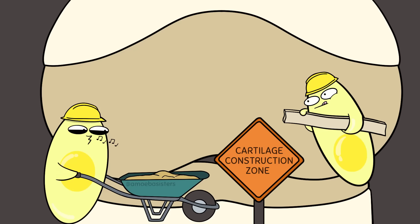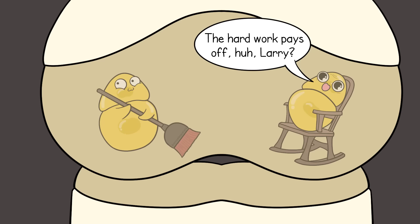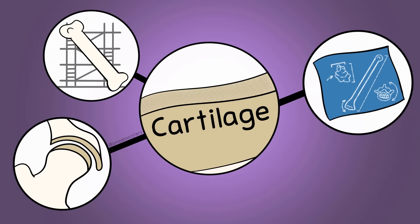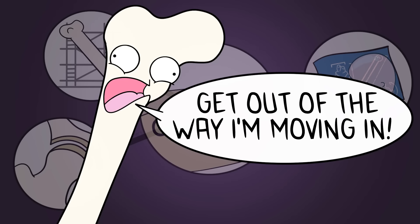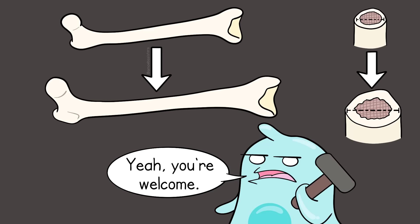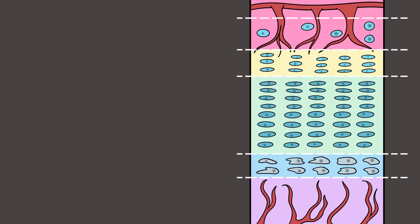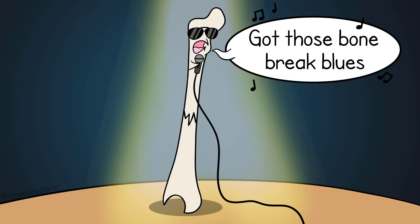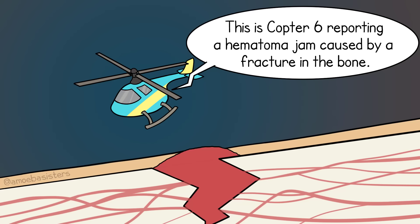Bone cells work alongside other cells. Chondroblasts make the connective tissue cartilage and can mature into chondrocytes, which maintain cartilage. Cartilage supports bone, is important in joints where bones are connected, and also serves as a template for bone placement. In fetal development, cartilage made by chondroblasts serves as the matrix for bones. Eventually, bone will replace most, but not all, of the cartilage matrix. With the help of osteoblasts, bones grow in length, usually until early adulthood, and can also grow in diameter even after they stop growing in length.